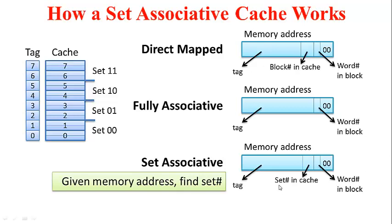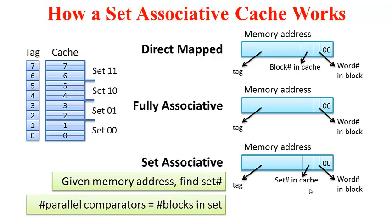In this example, how many bits do we need for the set number in cache? This is directly given in the diagram: we need two bits because there are four sets in this cache. How many parallel comparators are needed? In a set associative cache, a particular block of memory can be in any block within a set. The memory address directly tells us which set to look in, and within the set we do a parallel comparison of tags. So the number of parallel comparators required is the number of blocks in the set, which in this example is 2.